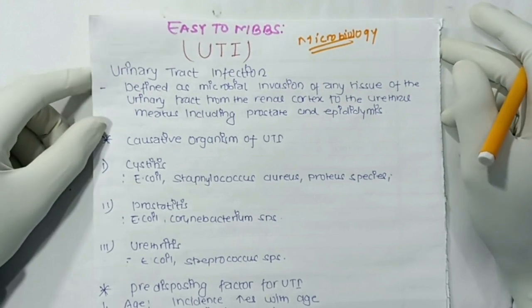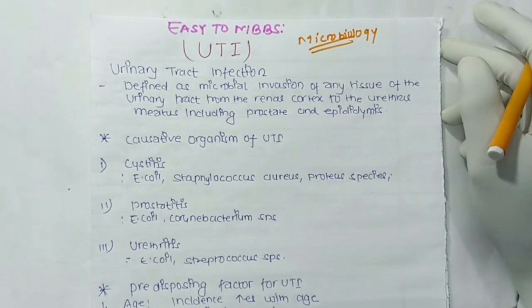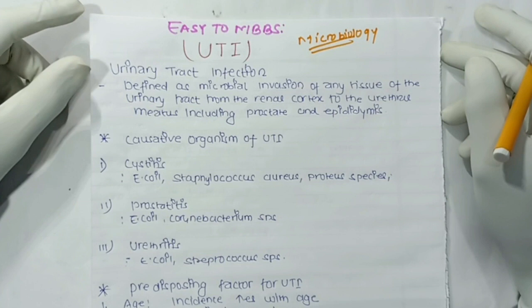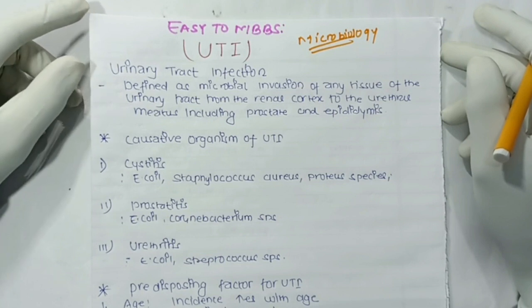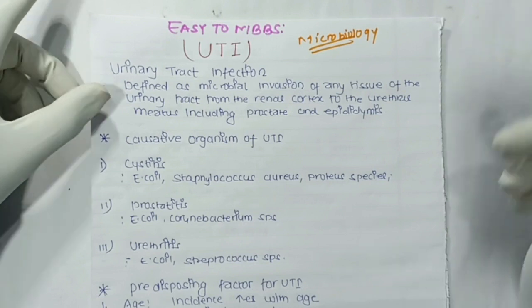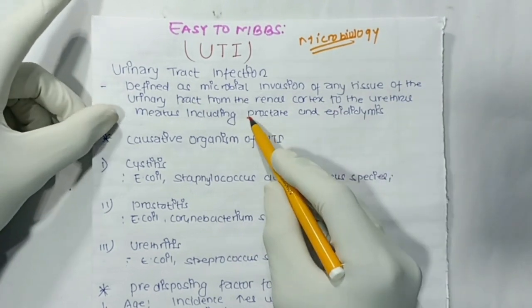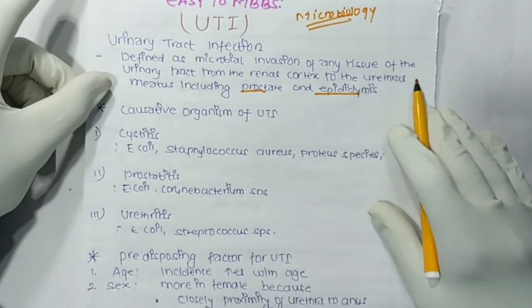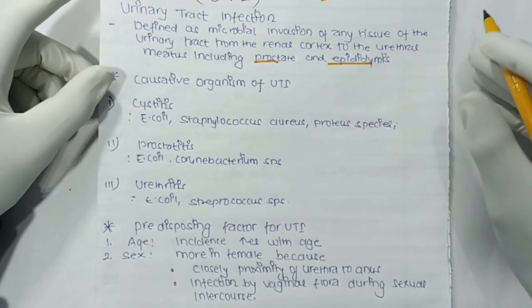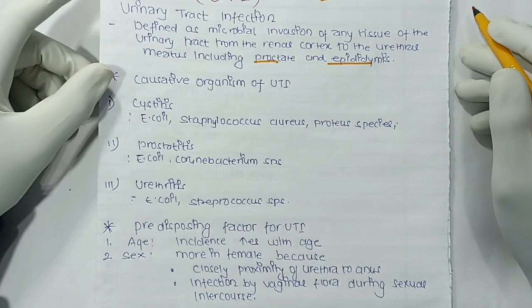Now we are going to discuss UTI. First, the definition: UTI is defined as the microbial invasion of any tissue of the urinary tract, from the renal cortex to the urethral meatus, including the prostate and the epididymis.